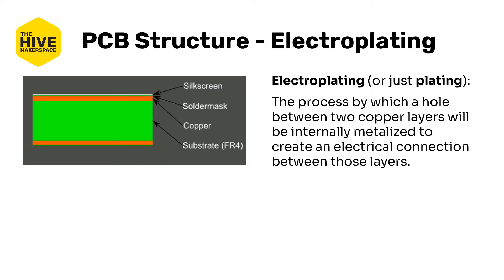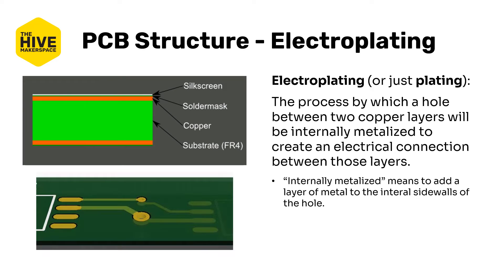Electroplating, or just plating, is commonly heard when referring to what are known as vias. Consider a component on the left-hand side of the bottom left figure, sitting on the top side of the board. If it needs to connect to something that is also on the top side, there is no problem — we just connect with a single trace, which is what we call the printed copper wire along the top surface. But what if we needed to connect to something on the other side of the board? A hole can be drilled through the substrate to make a path, but it is still non-conductive. Vias are electroplated holes that connect traces across different copper layers.